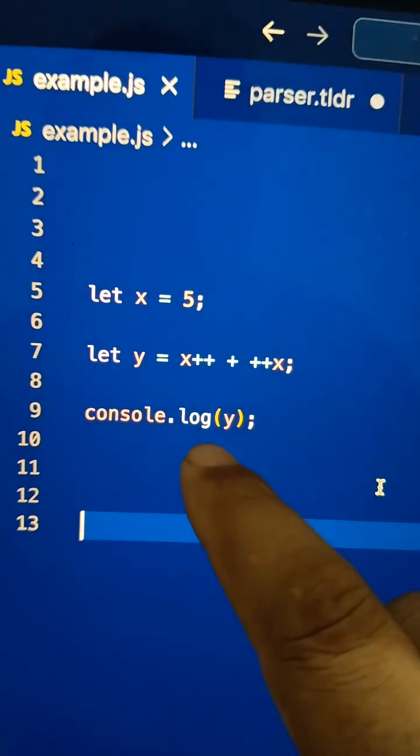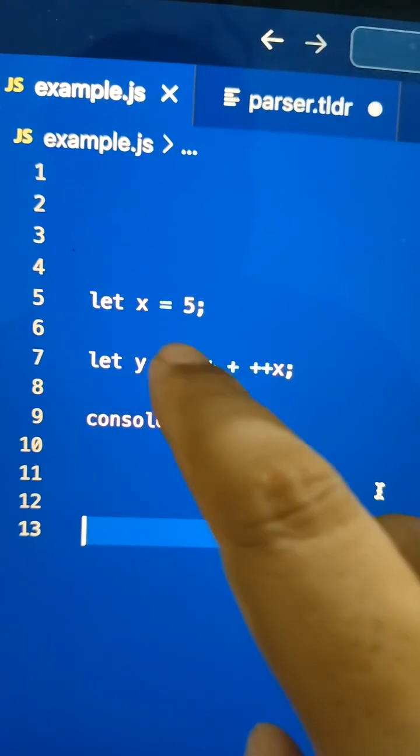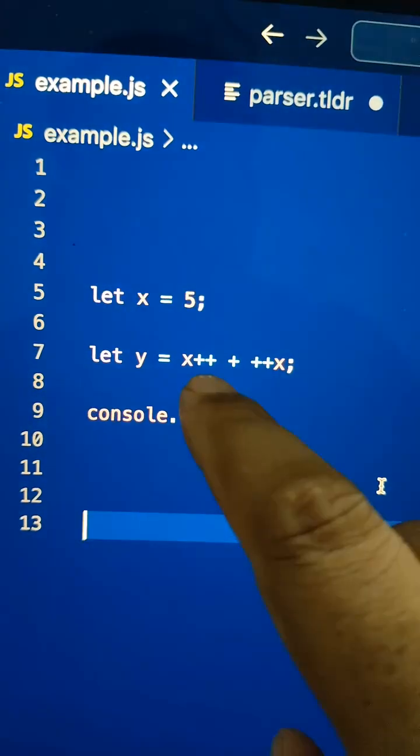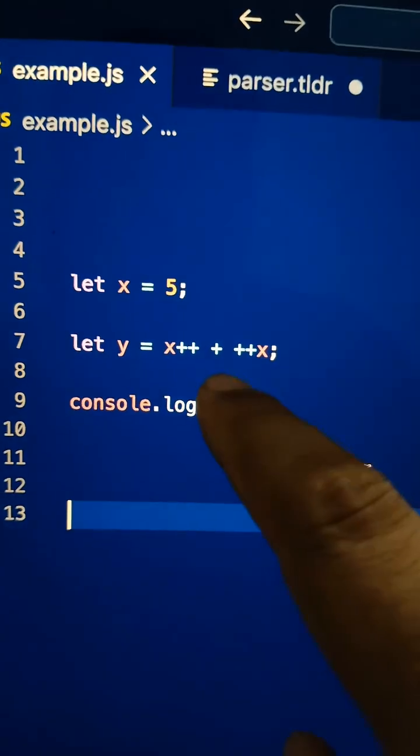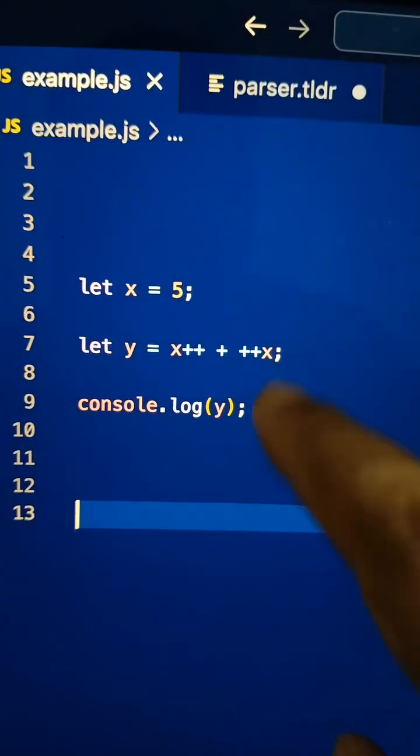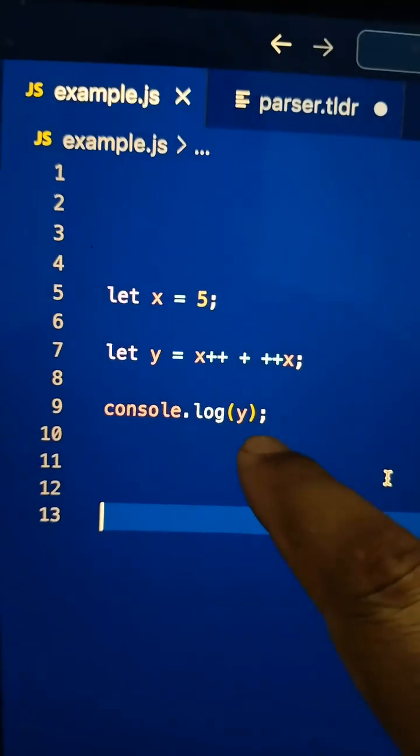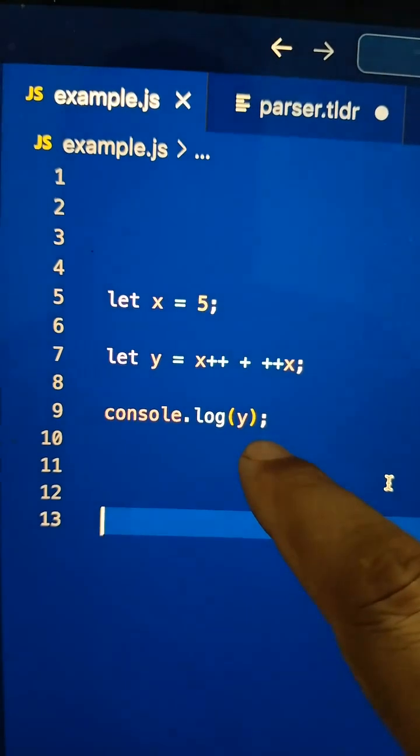Can you tell the output of this console? As you can see, x is assigned 5, and we have post-increment of x plus pre-increment of x. Can you tell the output here? It is a very tricky question, let me help you.